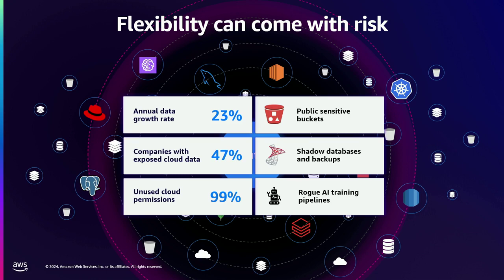A lot of organizations use multiple clouds, have outsourced dev teams constantly spinning up new resources, developing new pipelines, and operating somewhat autonomously without much oversight from security. We see massive data growth year over year — new buckets, new object storage, new databases, AI training pipelines introducing new risk. This creates data sprawl that's really challenging to secure. The same problem existed in the on-prem world: data kept growing, permissions kept changing, we had permissions creep. It becomes a tangled mess of permission controls, bucket policies, ACLs, all these identities, and cross-account access in AWS — very difficult to untangle and understand how data is exposed.